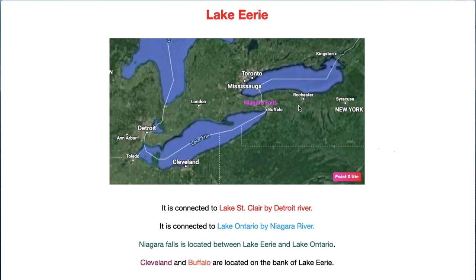The next lake is Lake Erie. Lake Erie is connected to Lake Huron through Lake St. Clair and the Detroit River. Detroit is a very famous city known for its automobile industry. Lake Erie connects to Lake Ontario via Niagara Falls, which is a very famous waterfall in North America. Two important cities on Lake Erie are Cleveland and Buffalo.